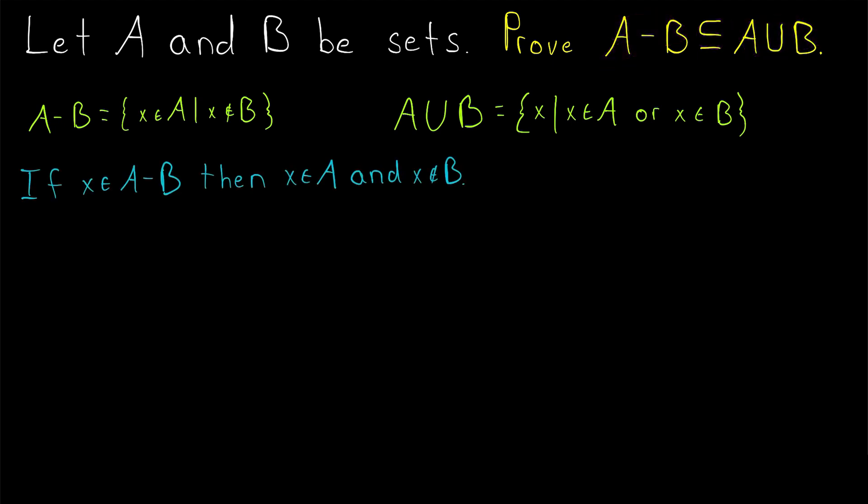Let's quickly write the proof. We begin a subset proof by saying if an element that we'll call x, if an element is in our subset, and remember, A minus B is what we're trying to show is a subset. So if an element is in our subset, then we can conclude what? And of course, what we can conclude will depend on the set we're working with.